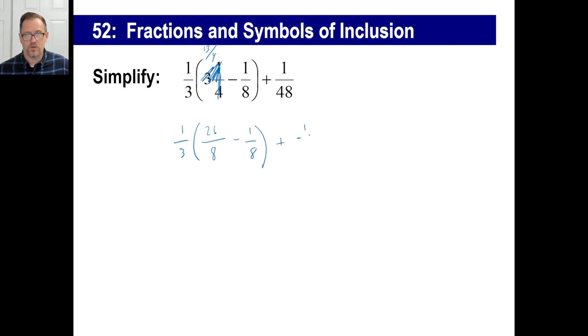And then plus one over forty-eight. Okay, so twenty-six-eighths minus one-eighth is, that's a three, twenty-five-eighths, right?